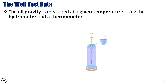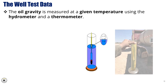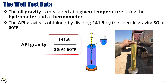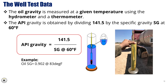The oil gravity is measured at a given temperature using a hydrometer and thermometer. The API gravity is calculated by dividing 141.5 by the specific gravity (Sg) at 60°F. This formula gives the API gravity, commonly used in the petroleum industry to classify the density of crude oil. A higher API gravity indicates lighter oil, while lower values indicate heavier oil.